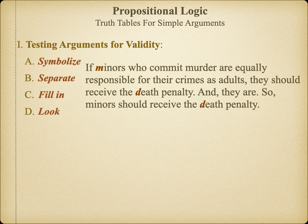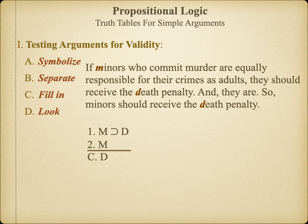Let's examine another argument using exactly the same terms. If minors who commit murder are equally responsible for their crimes as adults, they should receive the death penalty. And they are. So minors should receive the death penalty. To see the argument clearly, let's put it in standard form. Here we see M is assumed to be a sufficient condition for D. In the second premise, we're asserting that M is true. Hence, D should follow as a conclusion. But just in case the inference is unclear, let's build a truth table to see if our intuition is correct.